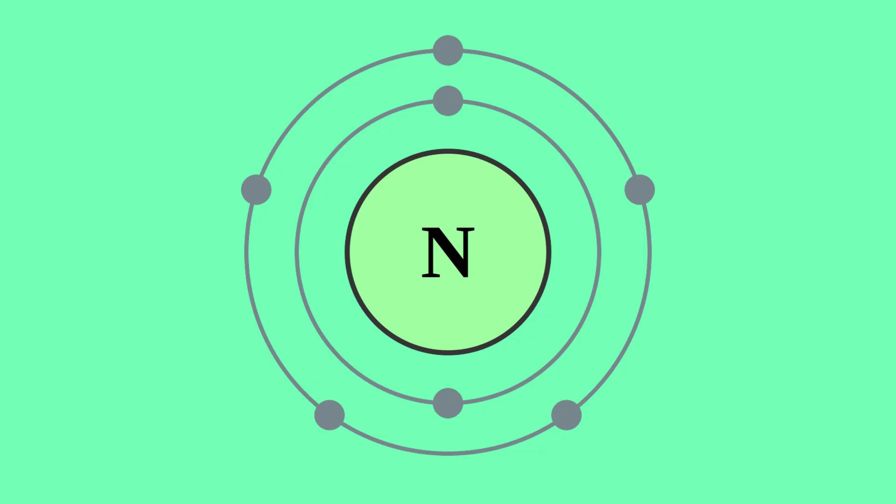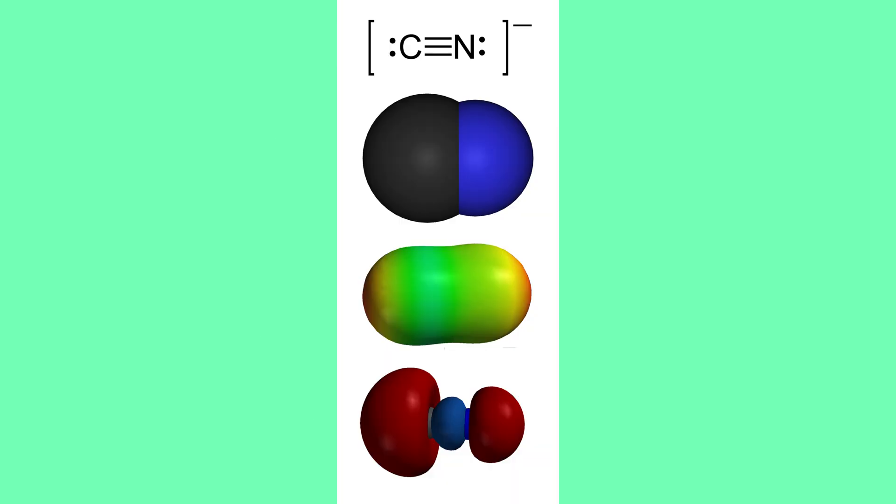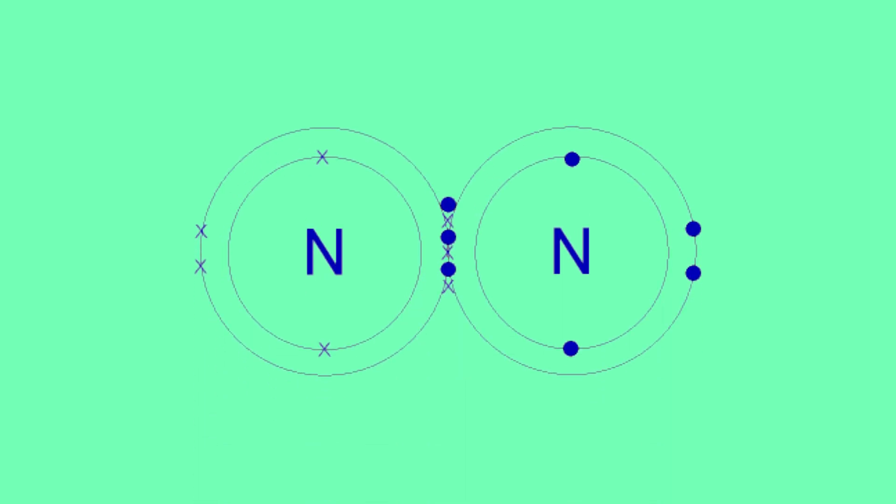It's got 5 electrons in its valence shell, which allows it to form super strong triple bonds like cyanide and N2, which is the stuff in our atmosphere.